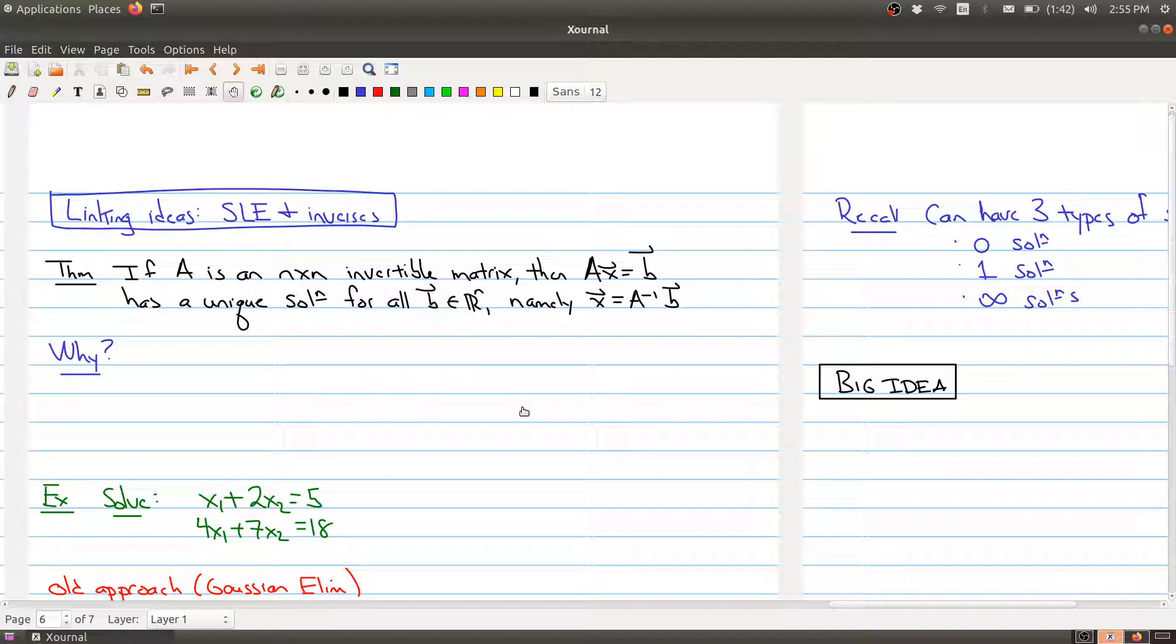So we have the following theorem that links some of these ideas together, which says that if I have an n by n matrix and it's invertible, then the matrix equation A x equals b actually has a unique solution. So normally we're looking for the number of solutions or if there is a solution. And when this matrix A is invertible, it has a unique solution for all b.